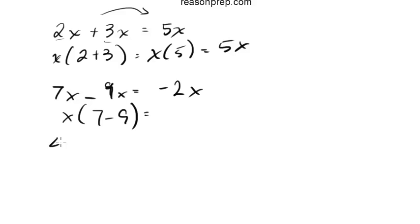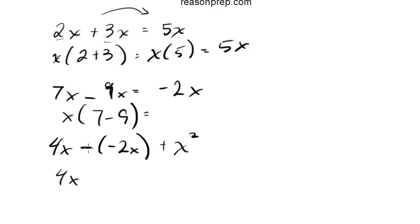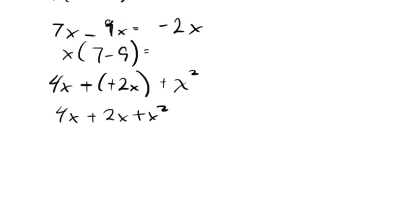What about something like 4x minus negative 2x plus x squared? We can rewrite this as 4x plus 2x plus x squared, since subtracting a negative is the same as adding a positive. These first two terms combine into 6x. But what about x squared? Since it's an x squared term and not an x term, we can't combine them by adding.